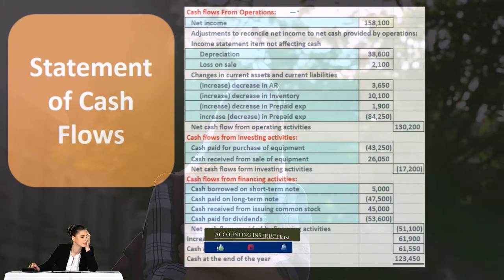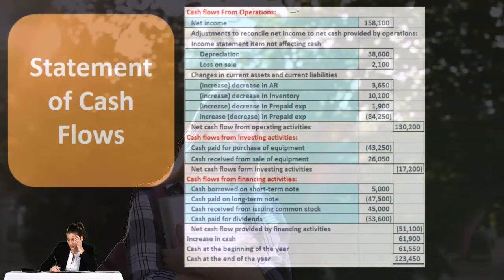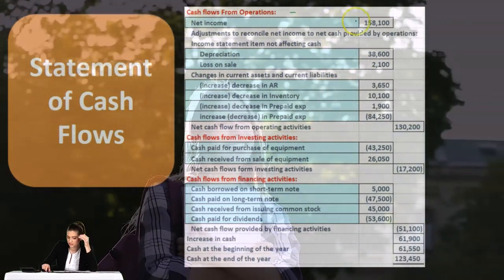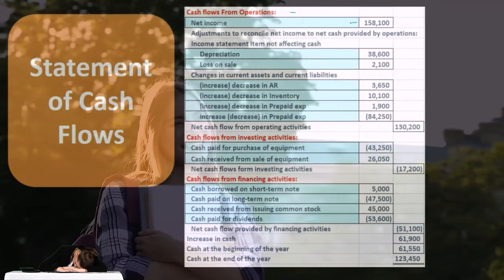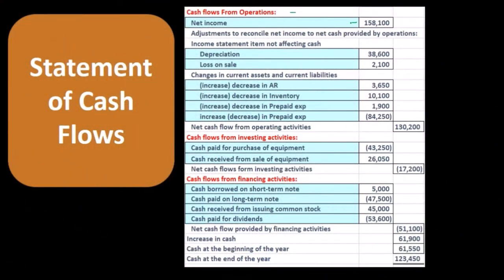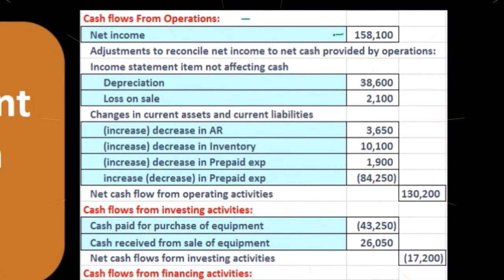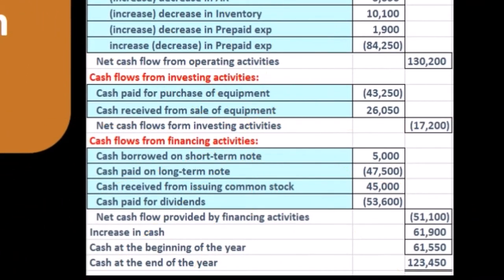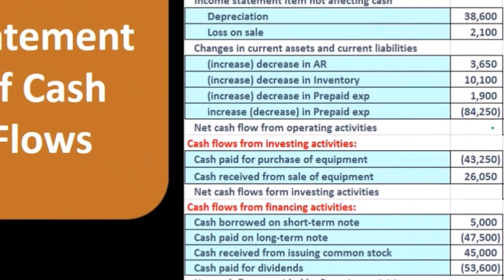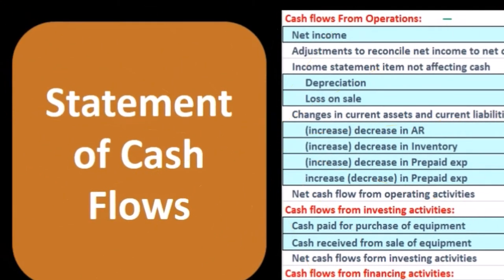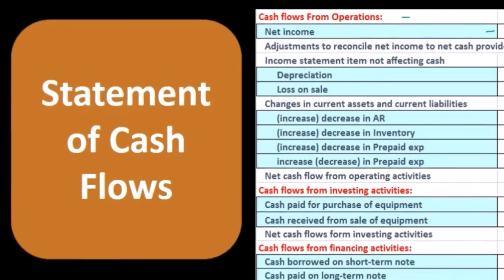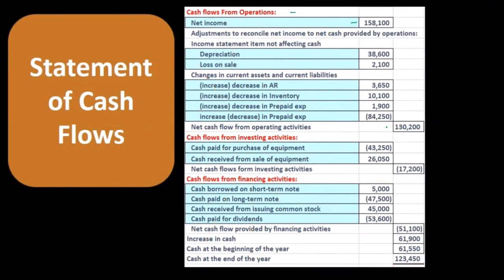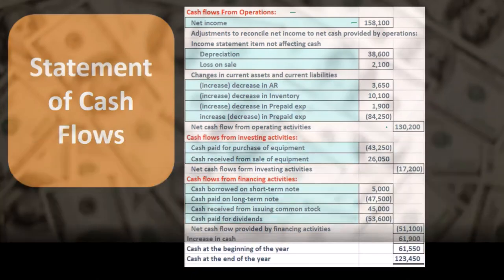The indirect method says: we already calculated net income, so let's start with net income at the top, then identify all factors that are not cash-related and pull those out, showing the difference between net income on an accrual basis and what it would be on a cash basis. That result is called net cash flow from operating activities, which is the operating section of the cash flow statement.